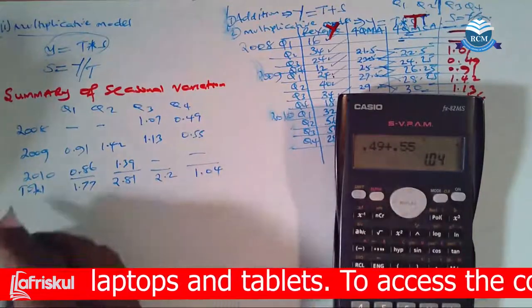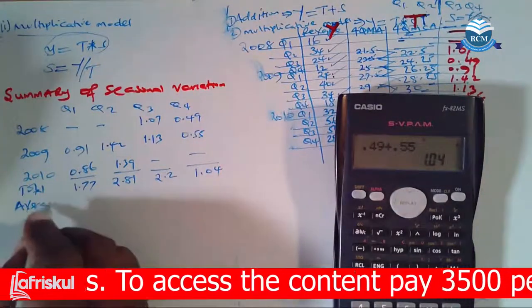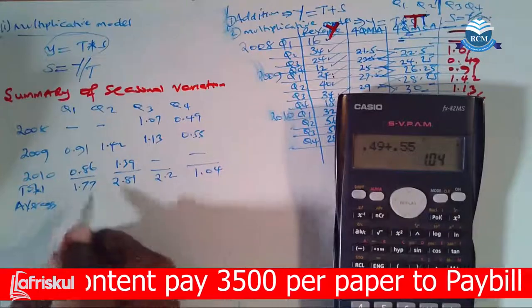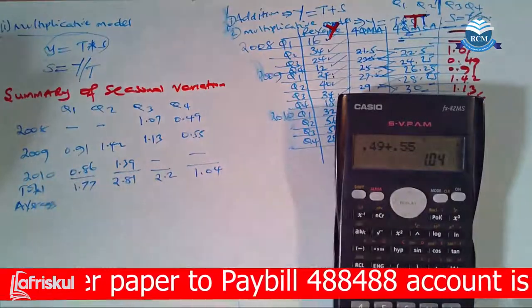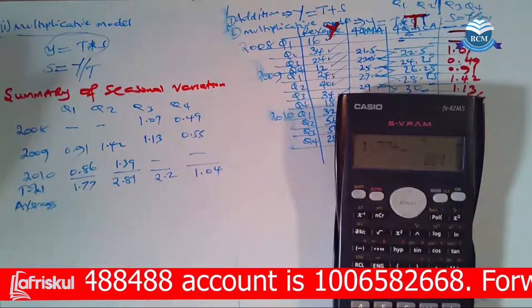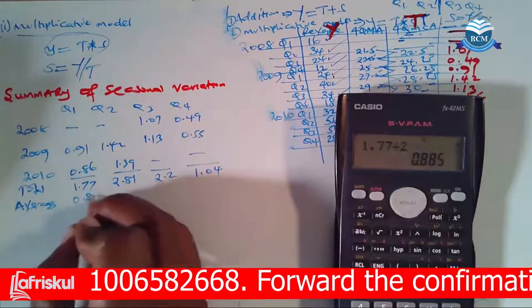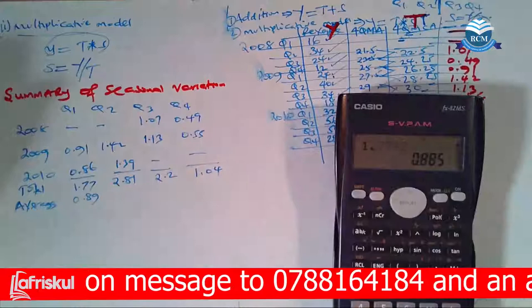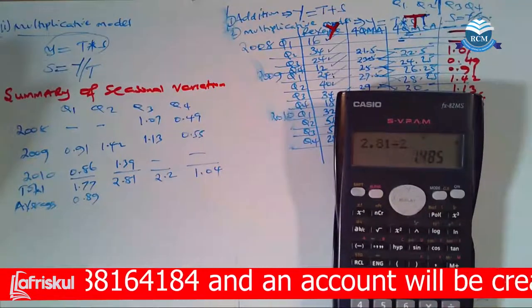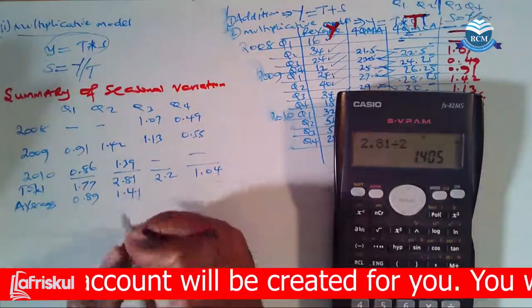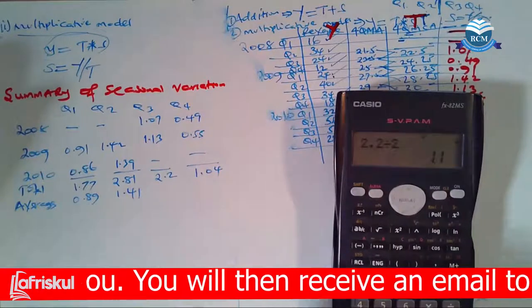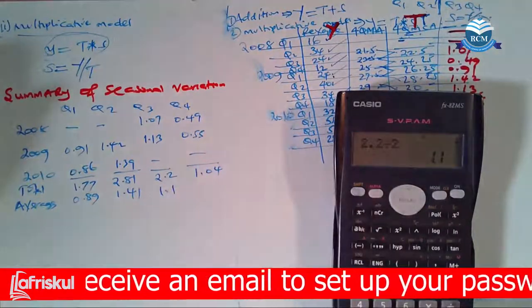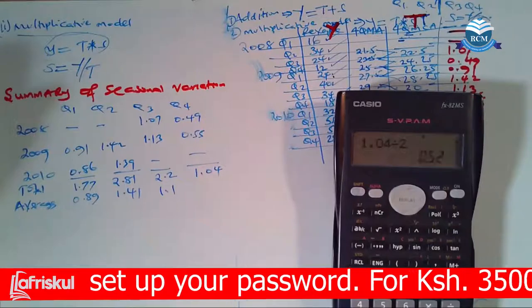After we get the total, we want averages. You can see to get 1.77, we have two numbers. So take 1.77 divided by 2, which gives us 0.89. 2.81 has got two numbers there, 2.81 divided by 2, which gives us 1.41. Then we have 2.2 divided by 2, giving us 1.1. 1.04 divided by 2, which gives us 0.52.